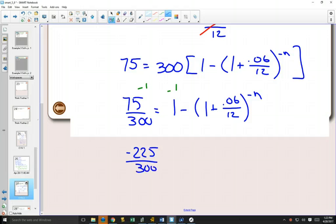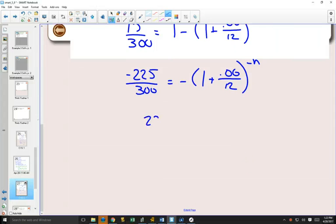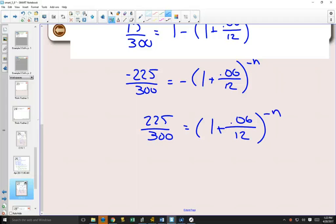So subtracting 1 on both sides will give you negative 225 over 300. So these questions are just long because of the amount of algebra we had to do, amount of rearranging, just to get this part by itself.